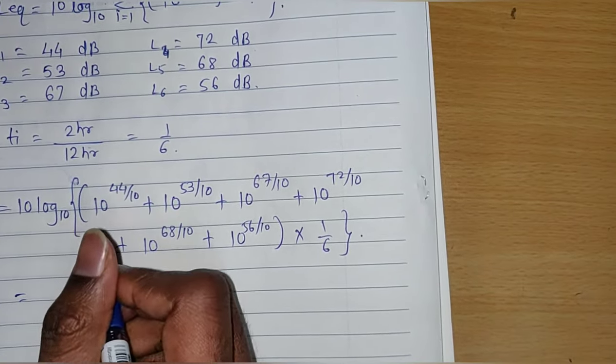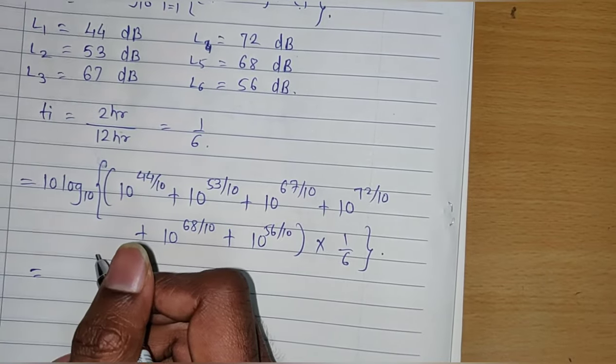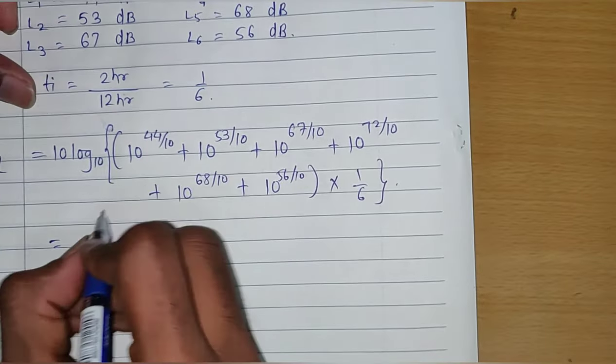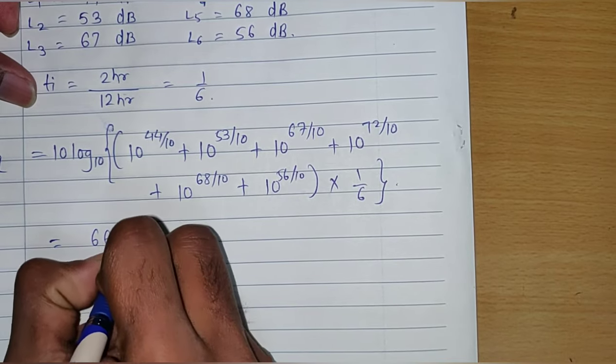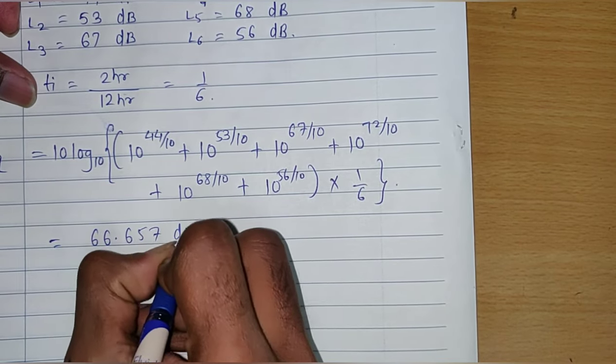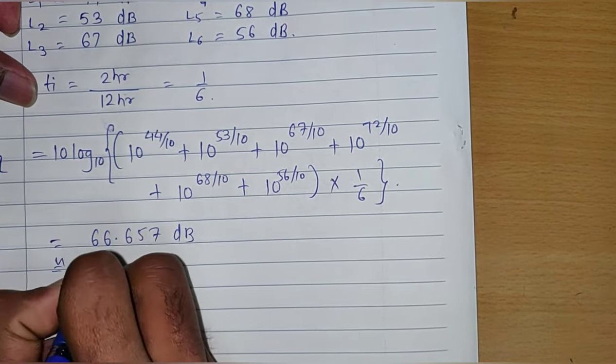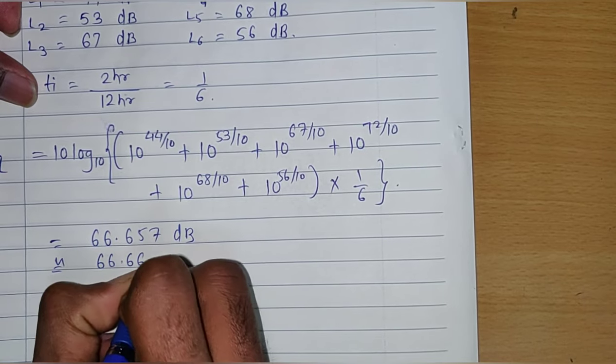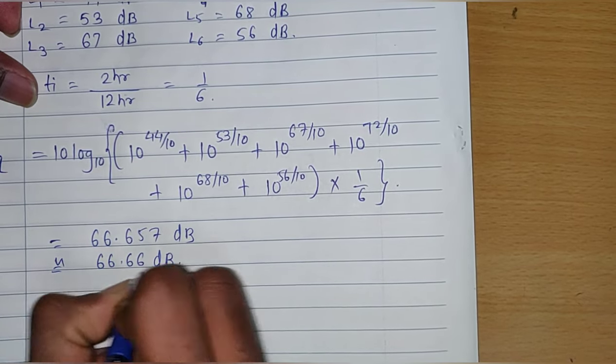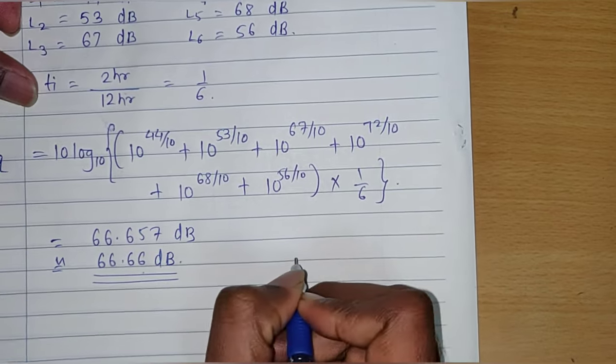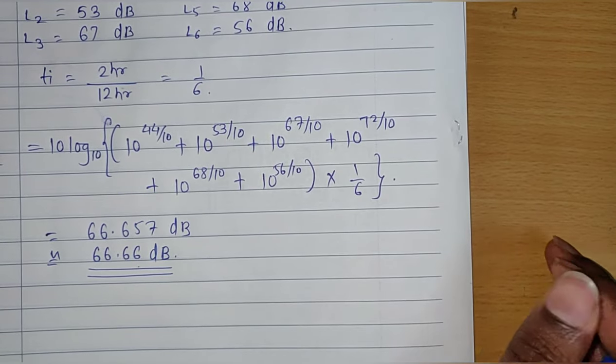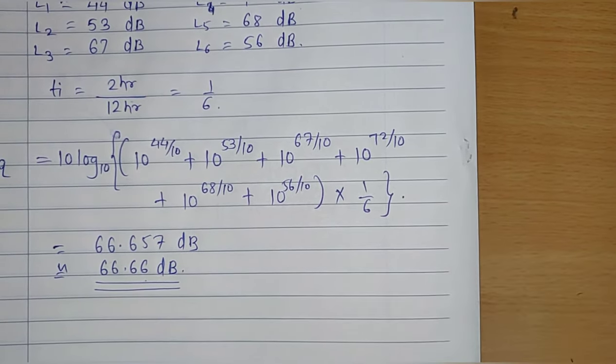66.657 decibels, or 66.66 decibels. This is the method to calculate the equivalent noise level. Thank you.